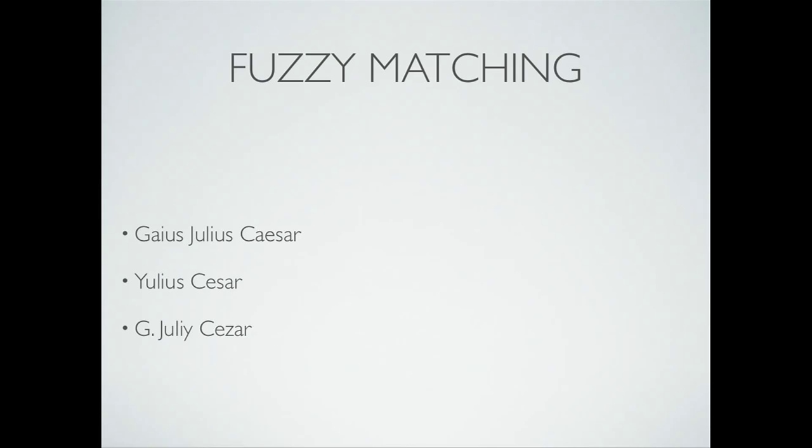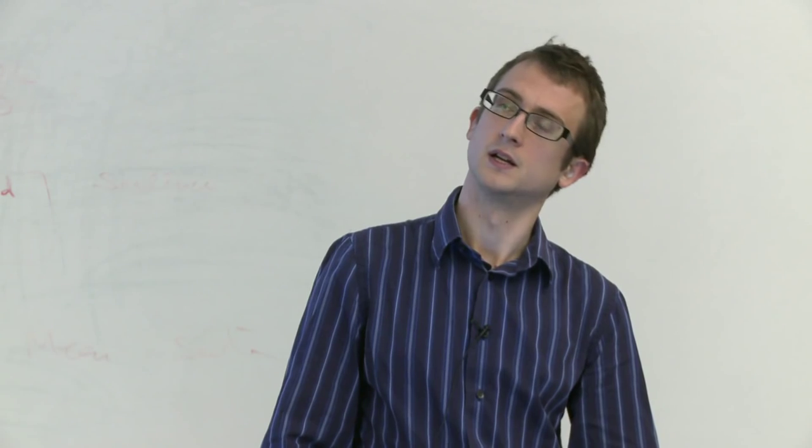One more advanced application is fuzzy matching. If you are looking through a text for the expression "Julius Caesar" and you see either "Gaius Julius Caesar" or the name in other languages, you might want to assign some weight to those values. If it's close enough and crosses a certain threshold, you want to be able to accept it as a match. There are a couple of different implementations for that in C and a few other languages.